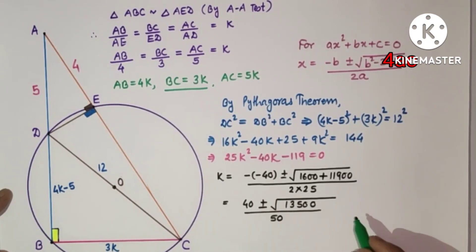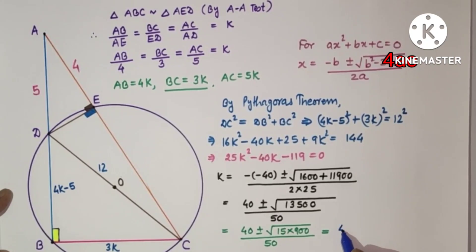That equals 40 plus minus under root 15 into 900 by 50, which equals 40 plus minus, 900 square root is 30, so 30 root 15 by 50, dividing by 10.